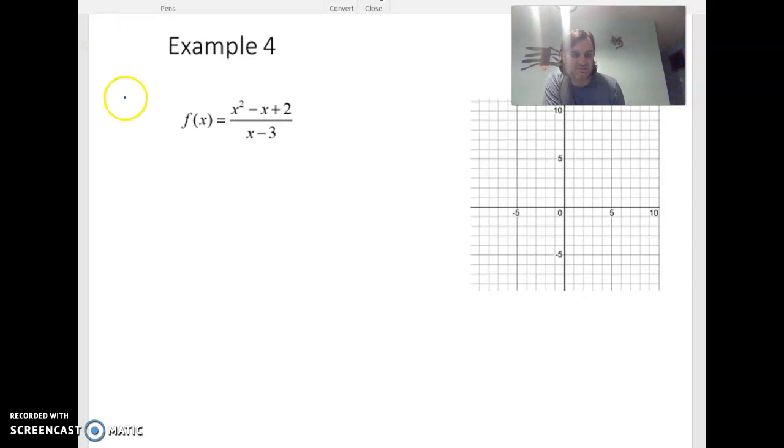Let's go ahead and start with our domain. We're going to set the denominator x minus 3 to be not equal to 0, which says the domain cannot use 3. And if that's the case, the vertical asymptote is 3, so I'm going to drop it over here the best I can.